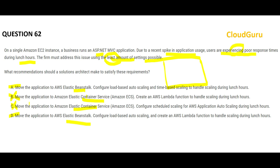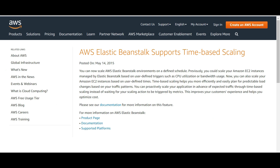We can clearly rule out B and C since we're eliminating ECS. Now, out of A and D, A is correct because it talks about using load-based auto scaling and time-based scaling to handle the lunch-hour spike. D says load-based auto scaling, which is fine, but then it says use a Lambda function to handle scaling during lunch hours — that is not required because Beanstalk already has a time-based scaling feature.